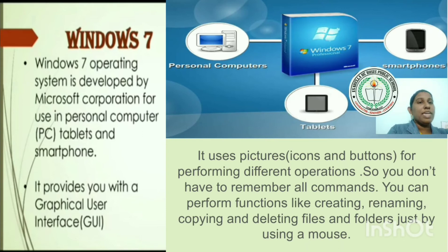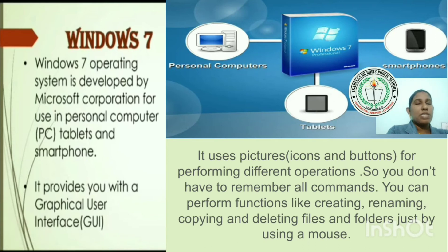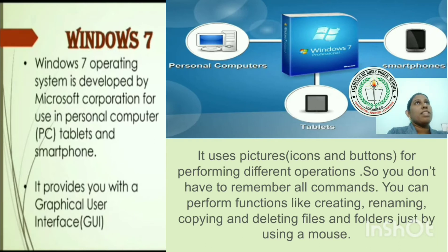What is a GUI? It uses pictures for performing different operations. In Windows 7, we use icons and buttons. An icon is a small picture on the desktop. We use icons instead of commands for performing different operations.